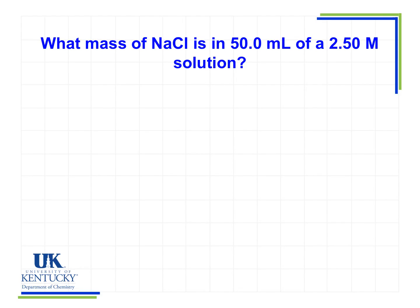Here's an example where we're trying to find the mass of NaCl. We're given that we have 50 milliliters of a 2.5 molar solution. So the first thing I'm gonna do whenever I see molar, which is short for molarity, is note that we have 2.50 molar, capital M, NaCl solution.